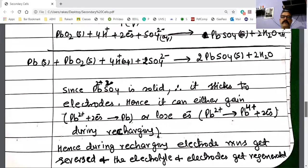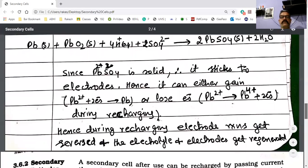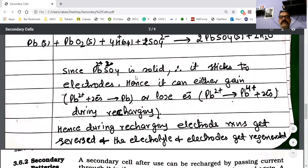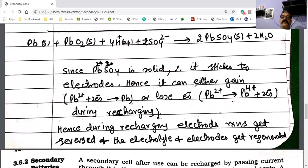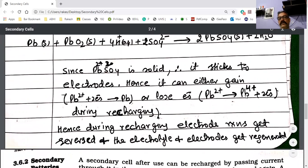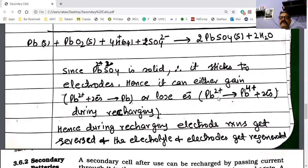After use, I told you that lead sulfate is solid, therefore it sticks to the electrode and hence it can either gain or lose electrons. When it gains electrons, it acts as cathode. When it loses electrons, it acts as anode. Lead sulfate can act as anode, it can act as cathode.